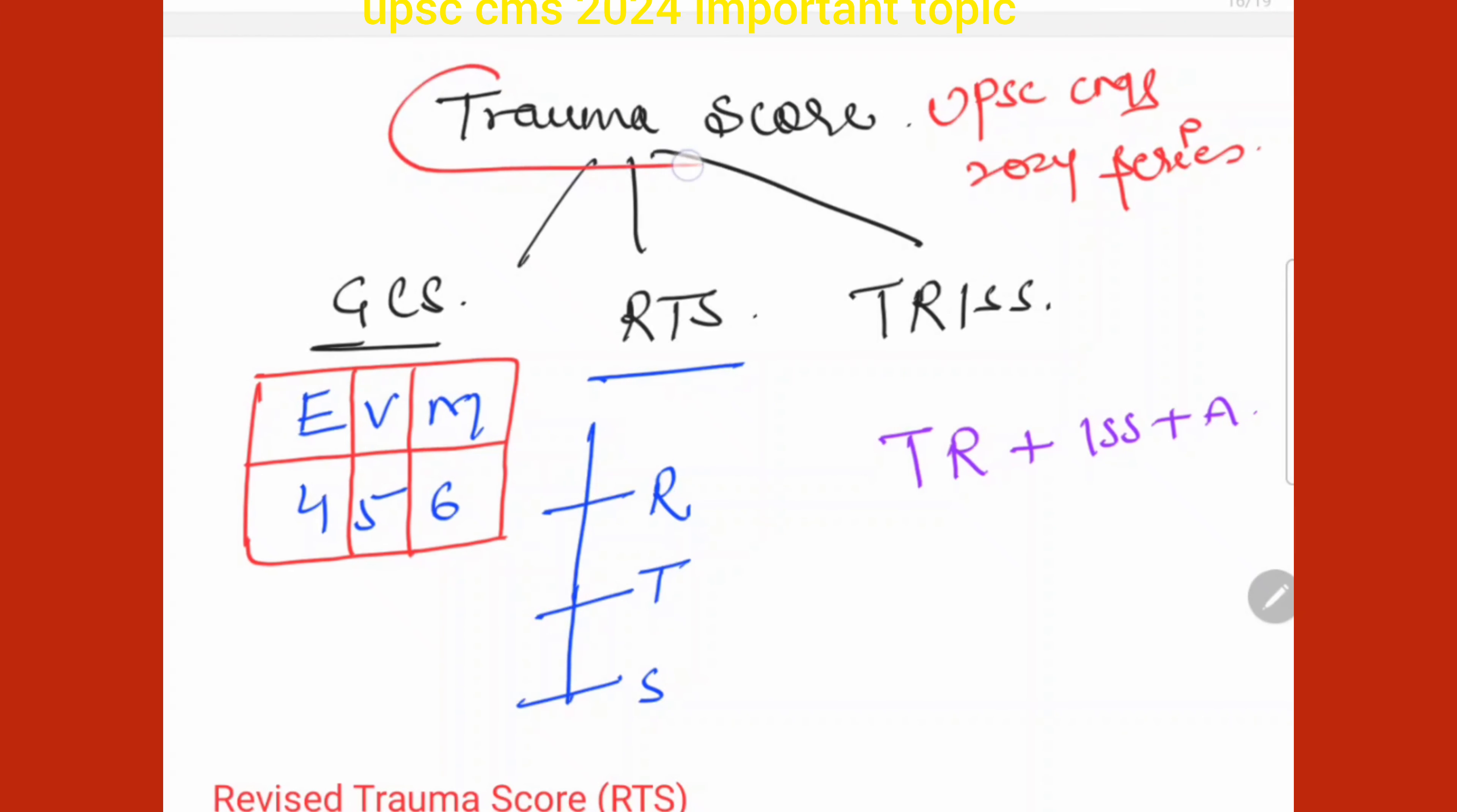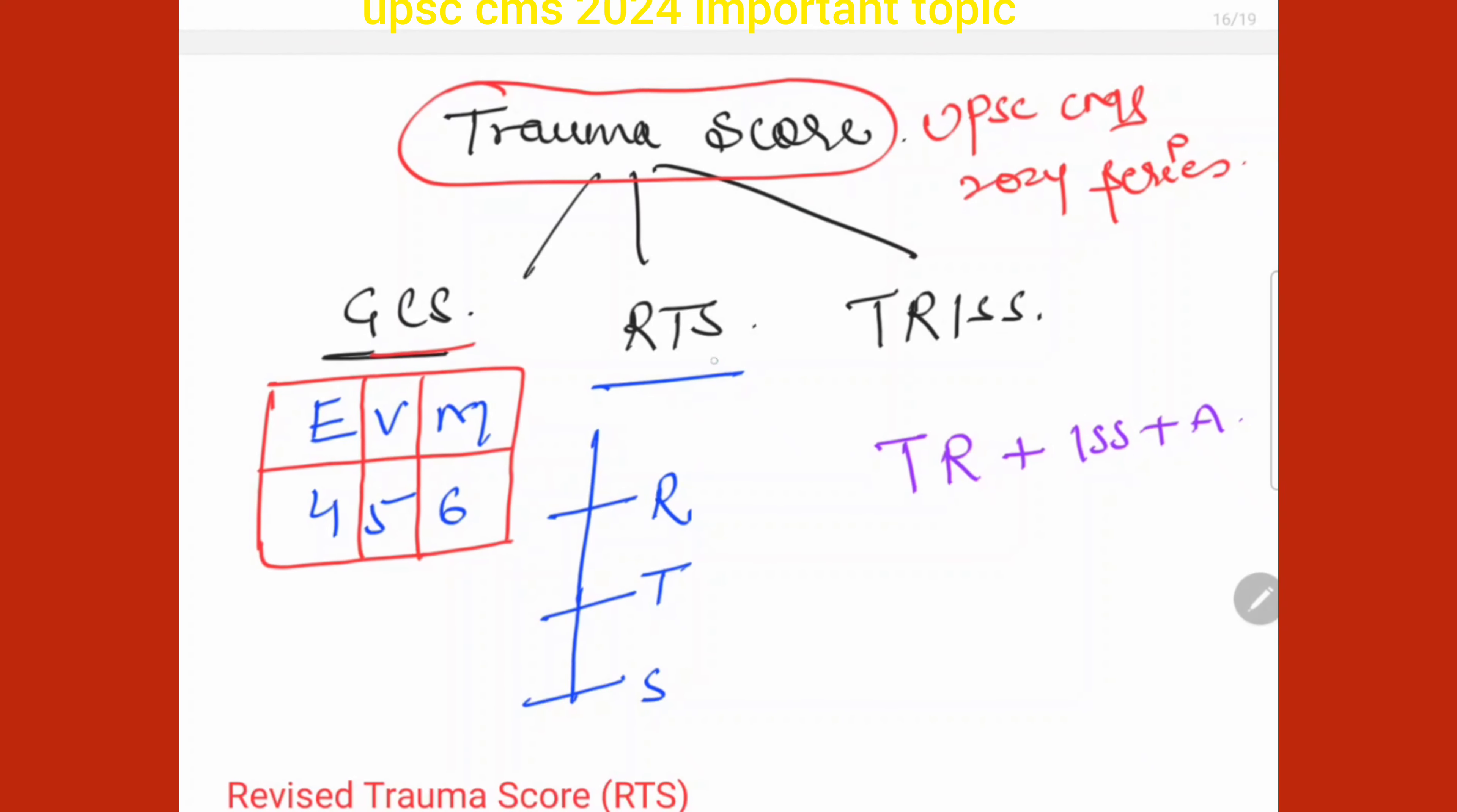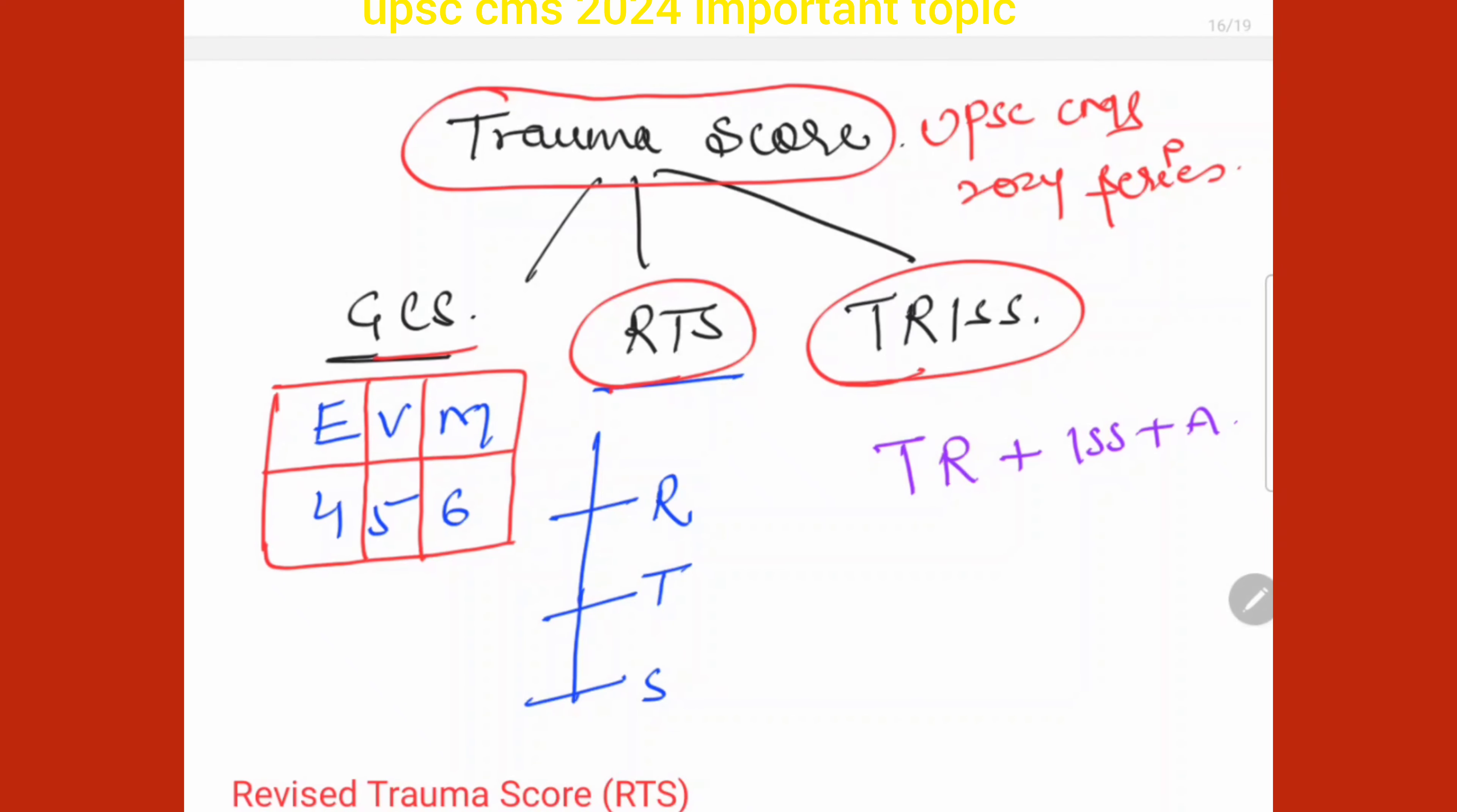For UPSC CMS 2024, let's start trauma score. Three scores you need to remember: GCS, RTS means Revised Trauma Score, and TRIS. Questions will come from all three, so let's start.